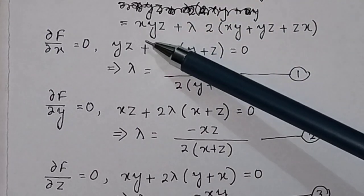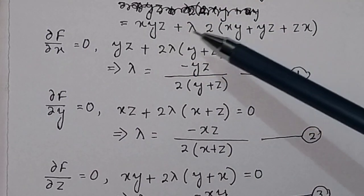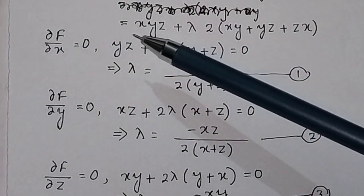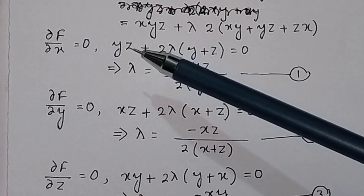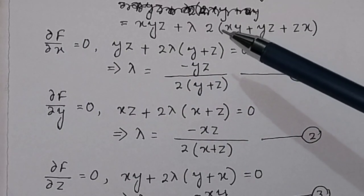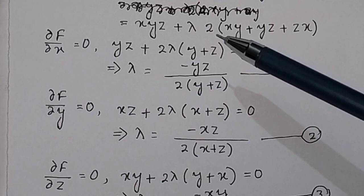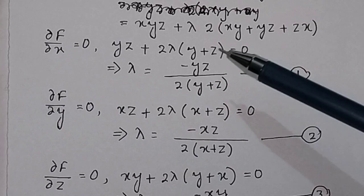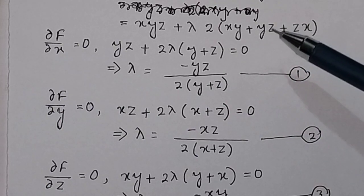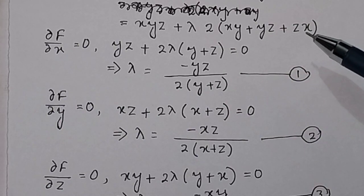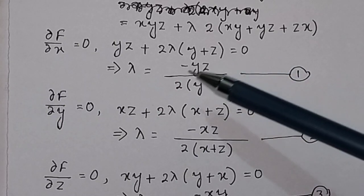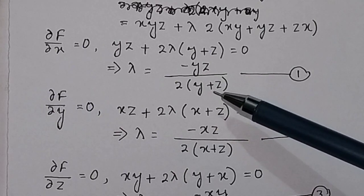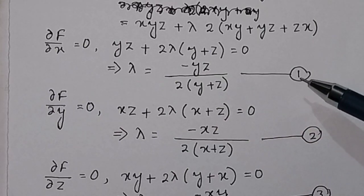Taking the partial derivative of this function with respect to x: ∂f/∂x gives yz from xyz, and the constraint term gives 2λ(y + z), since ∂(xy)/∂x = y and ∂(zx)/∂x = z. Setting this equal to 0, we get λ = −yz / 2(y + z). Call this Equation 1.